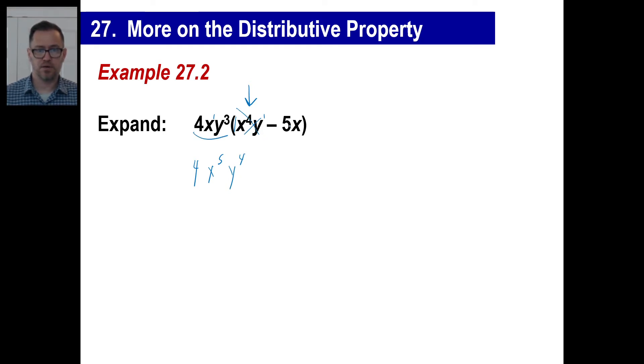A positive now times a negative is a negative. Four times five is 20. And we have x to the first times x to the first is x to the second. There's nothing for the y to the third to go along with. So you just stick it there at the very end as it is. And you're done. That's all there is to it.